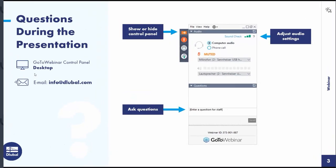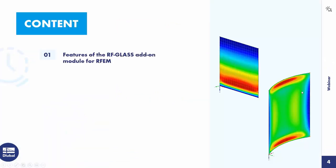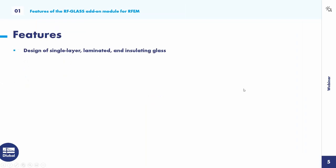I turn off my webcam so that you can see the full screen. To the agenda today, at first I will introduce some features of the add-on module of Glass. Then I design a glass railing with the help of RFM and the add-on module of Glass, and then a curved insulated glass pane. I start with the features of RF Glass.